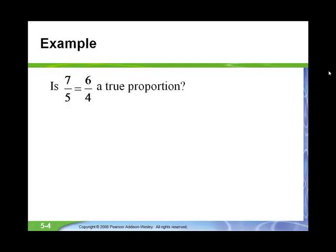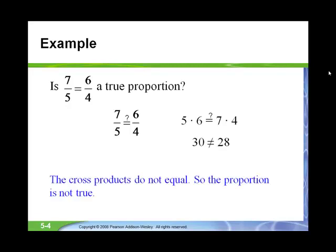Let's check if this proportion is true: 7 to 5 and 6 to 4. Again, we do cross multiplication. 5 times 6 and 7 times 4. Well, it turns out 5 times 6 is 30, and 7 times 4 is 28. Therefore, this is not a true proportion.